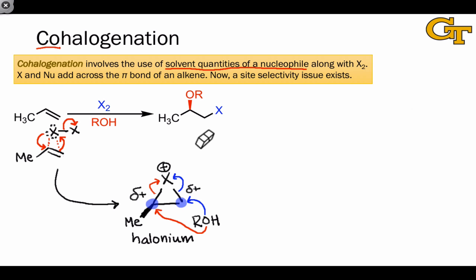The more substituted carbon, despite being more sterically hindered, bears more positive charge. For this reason, it reacts preferentially with the nucleophile. An SN2 substitution or ring opening of the halonium ion gives rise to a product in which the nucleophile ends up connected to the more substituted carbon rather than the less substituted carbon.